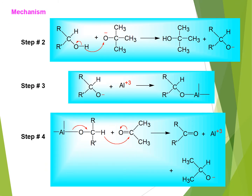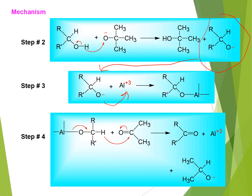In step three, the anion produced from the secondary alcohol will share its excess electrons with the aluminum ion, which was produced in the first step from aluminum tertiary butoxide. After sharing the excess electron of the anion to the aluminum ion, it forms aluminum isopropoxide. After forming aluminum isopropoxide, in the next step, it will react with acetone.